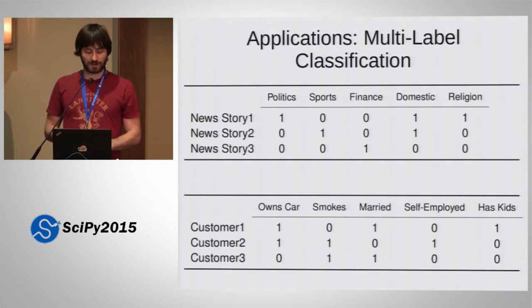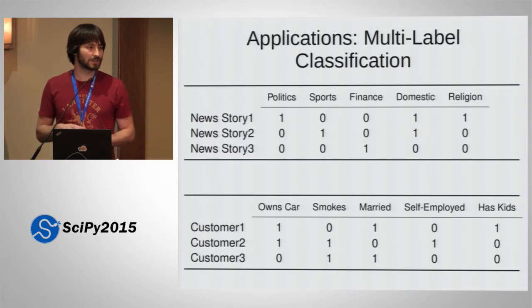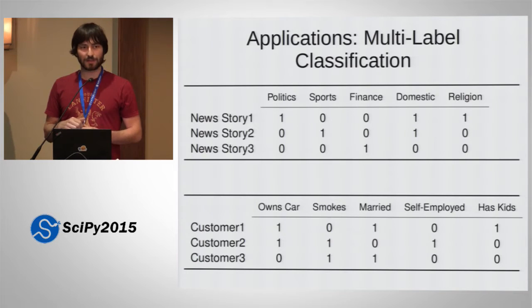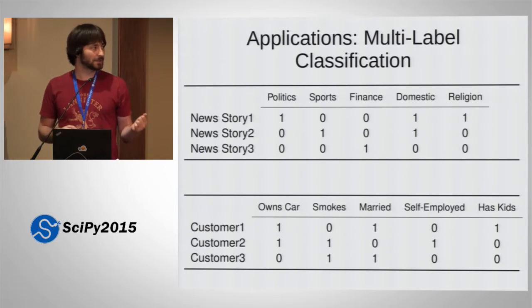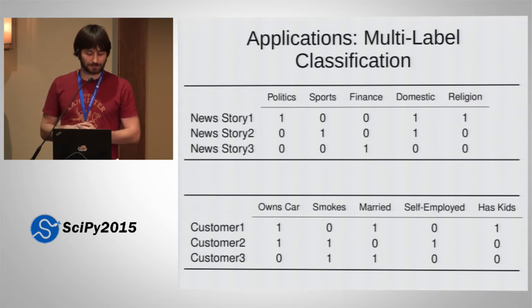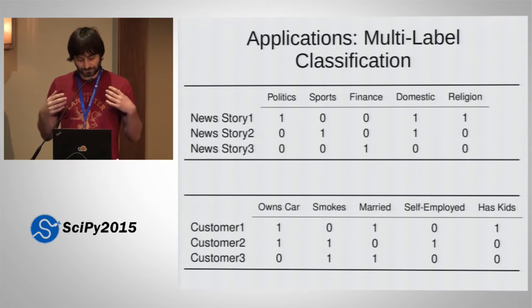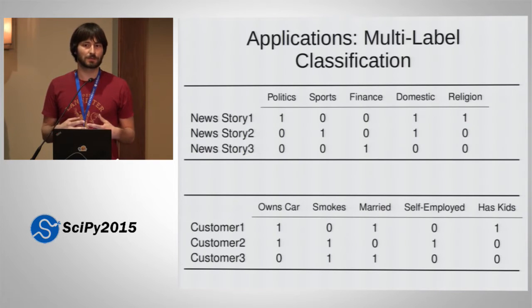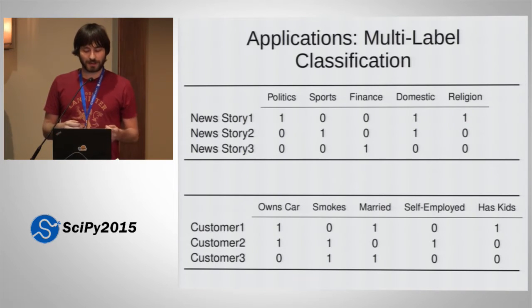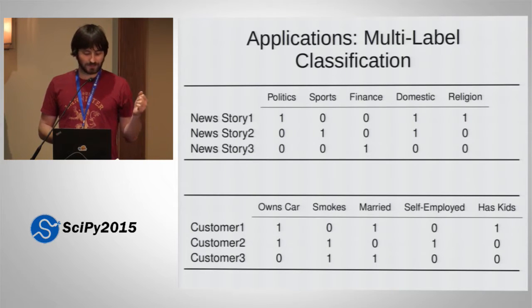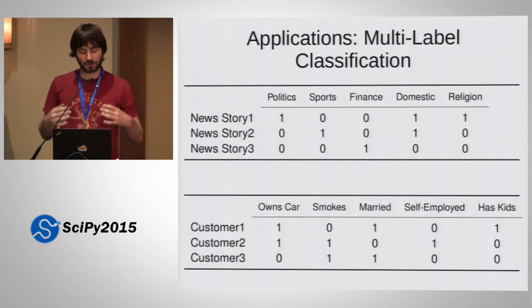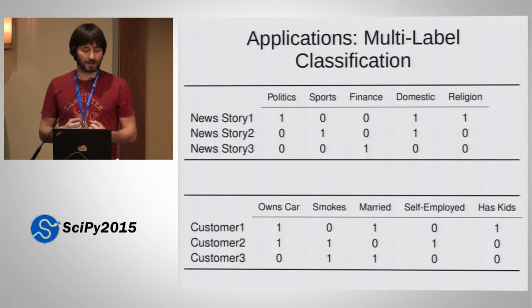There are two ways you could try to approach this problem using standard classification. You could say these are a lot of binary problems — for a news story, it could be about politics or not about politics. Train a binary classifier, then another one for sports, and another one for finance. You could definitely do that. However, you would miss all the correlations that might be between these classes. It's very unlikely that something is both about sports and about religion, and if you could model these decisions more jointly, you might be able to do better.